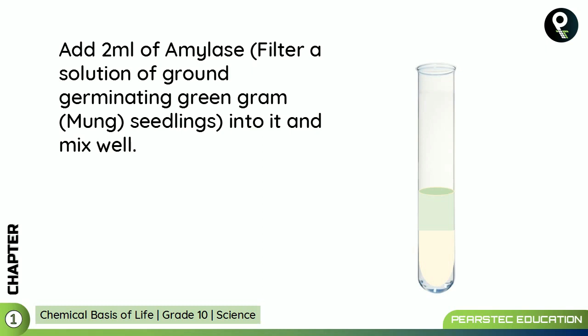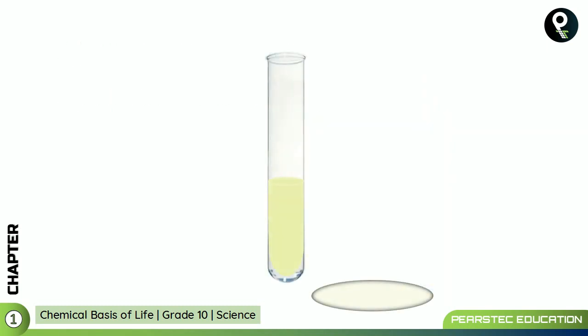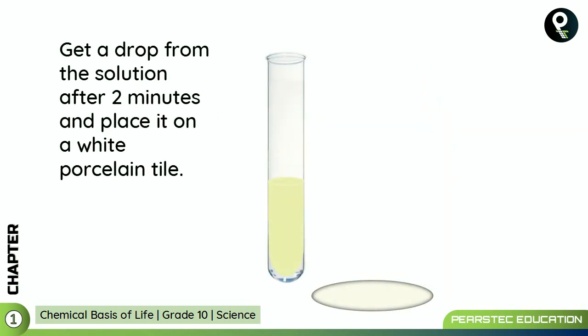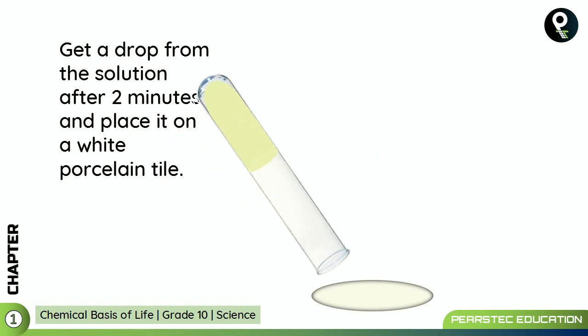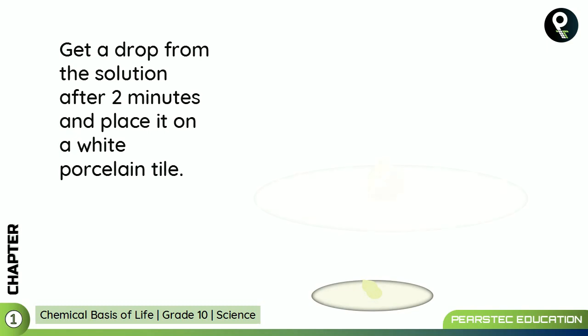You can get amylase from a filtered solution of ground germinating green gram seedlings. Add it to the starch solution and mix well. After two minutes, get a drop from the mixture and place it on a white porcelain tile.